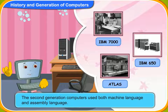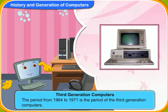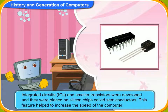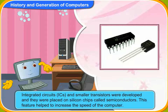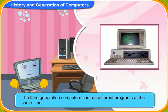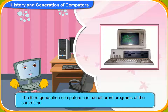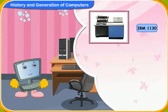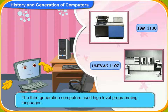The second generation computers used both machine language and assembly language. The period from 1964 to 1971 is the period of the third generation computers. During this period, integrated circuits and smaller transistors were developed and placed on silicon chips called semiconductors. These features help to increase the speed of the computer. The third generation computers can run different programs at the same time and the common man could now use computers. IBM 1130 and UNIVAC 1107 are examples of third generation computers. These computers used high level programming languages.